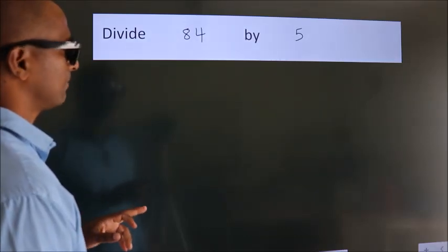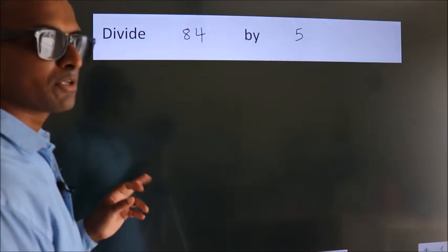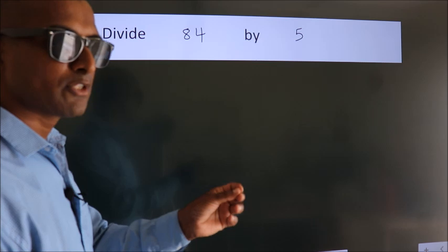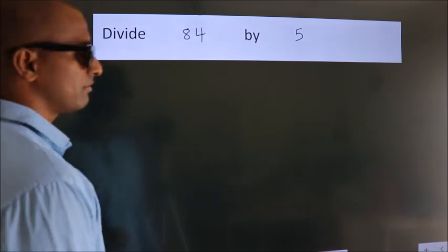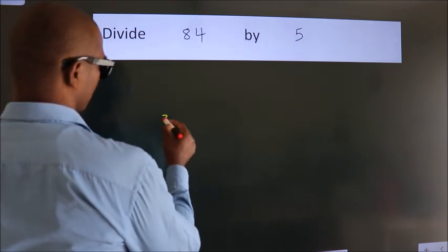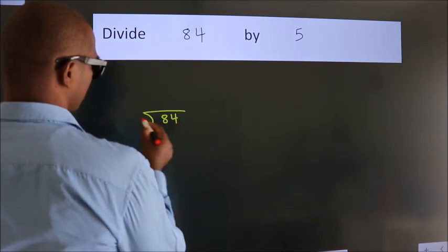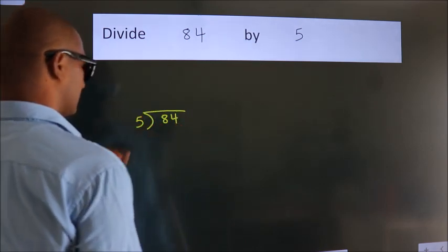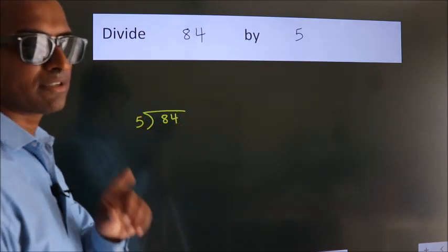Divide 84 by 5. To do this division, we should frame it in this way. 84 here, 5 here. This is your step 1.